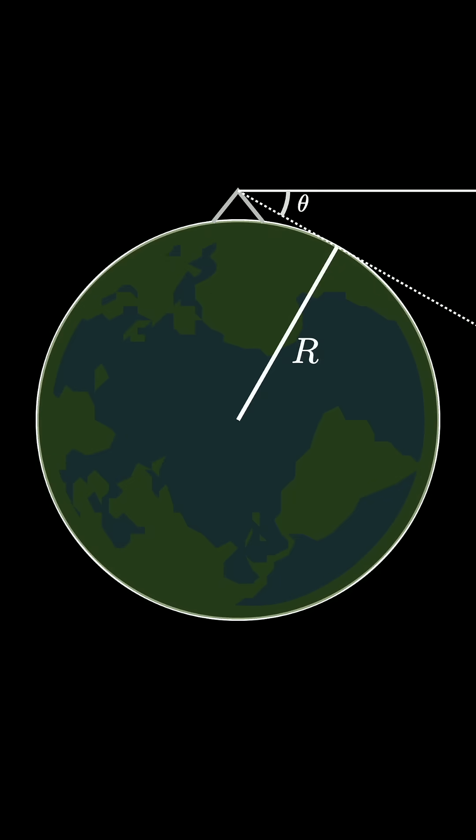Here's the radius of the Earth, and you have a right-angle triangle here. The right-angle triangle, the hypotenuse, is the radius plus the height of the mountain. If this angle is theta, then by trigonometry, this angle is also theta.